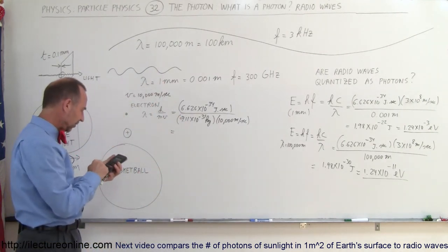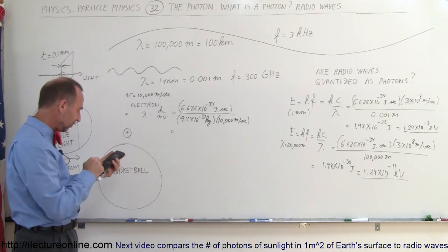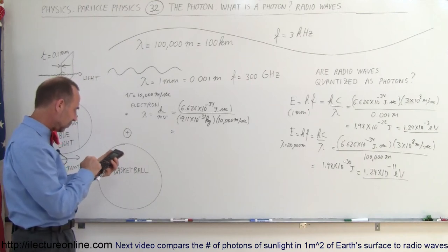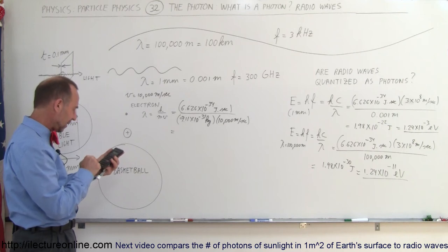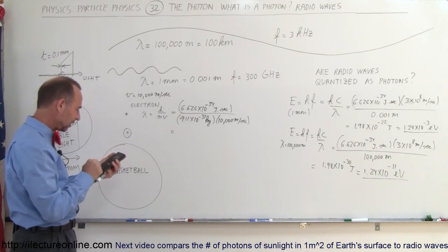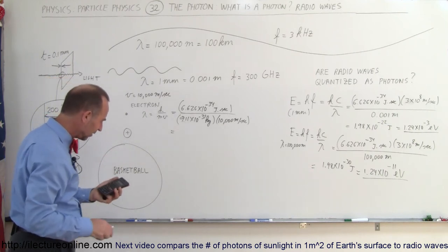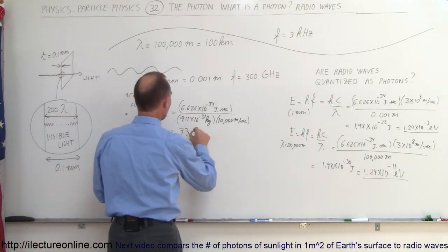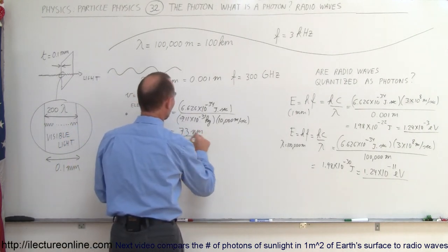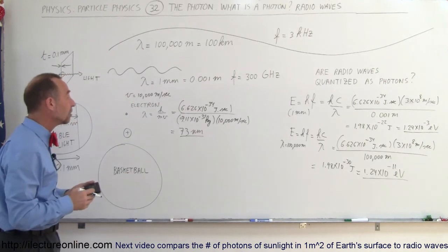So we have 6.626 × 10⁻³⁴ divided by 9.11 × 10⁻³¹ kilograms times 10,000 meters per second, and that gives us a wavelength of about 73 nanometers — which is roughly the wavelength of ultraviolet radiation.